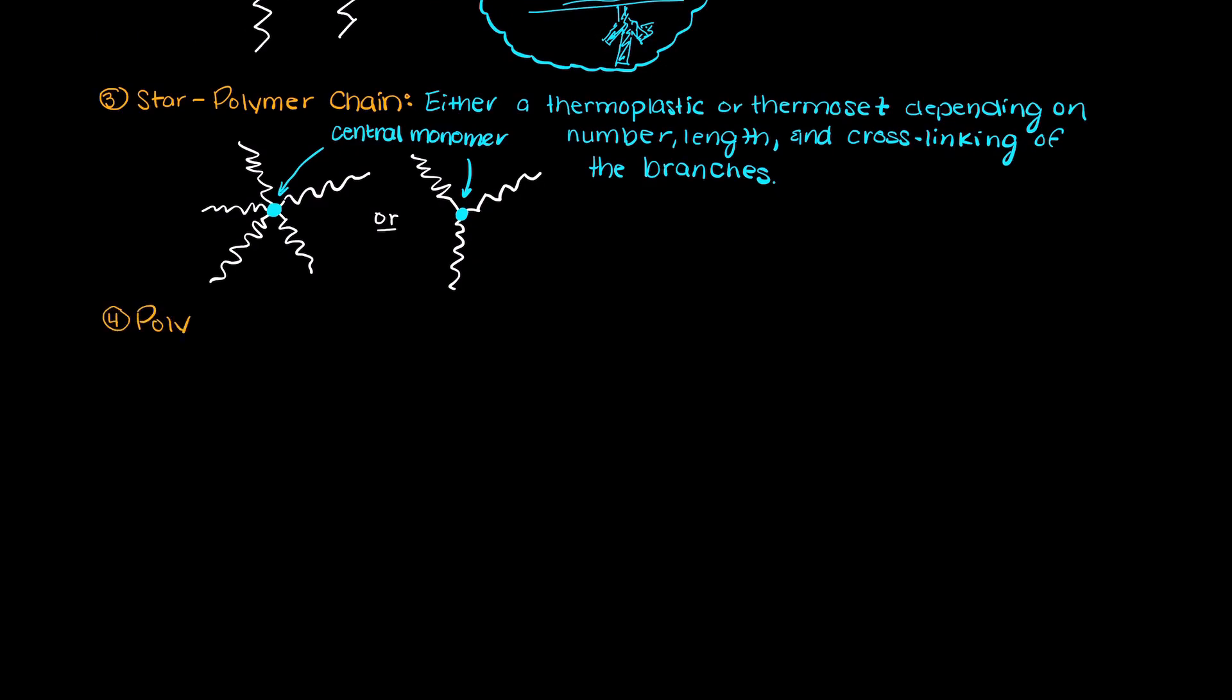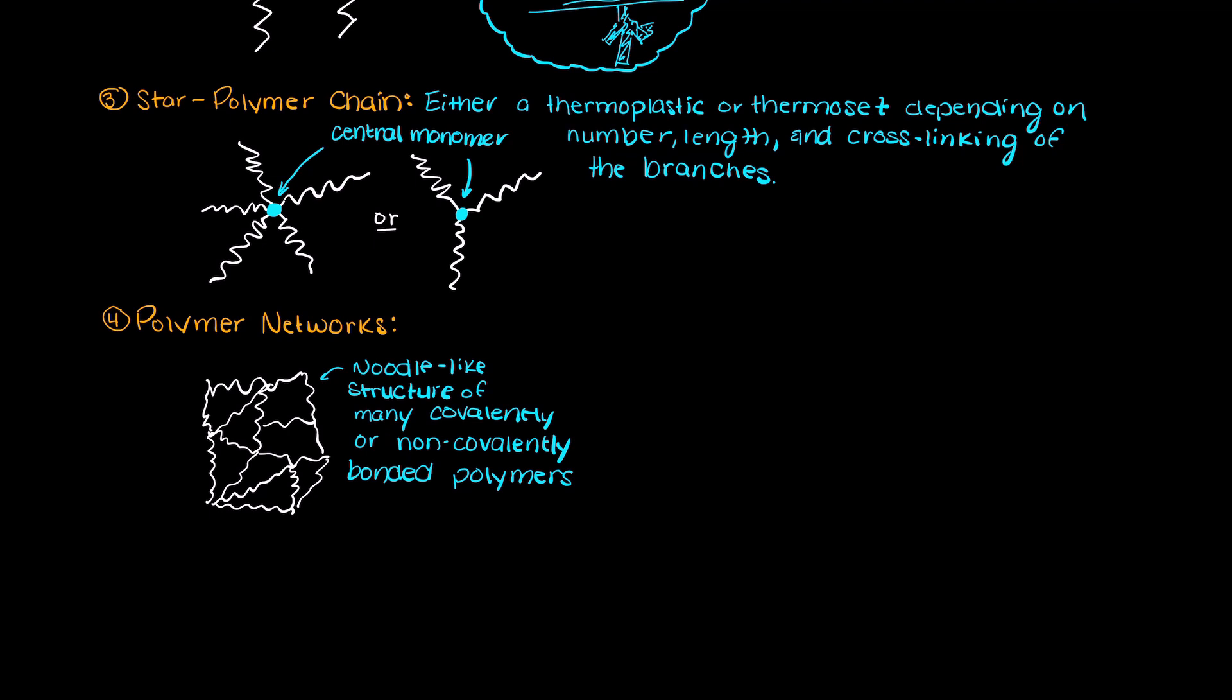Fourthly, we could have polymer networks. Polymer networks are composed of many small polymer chains that are connected either covalently or non-covalently and it creates this noodle-like structure or cross-linked pattern.